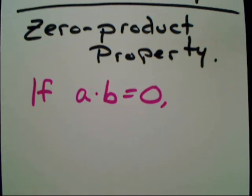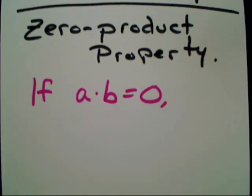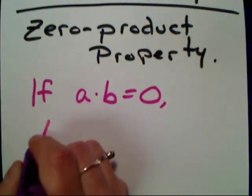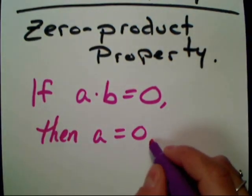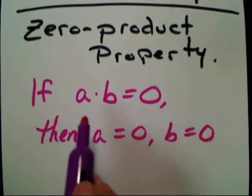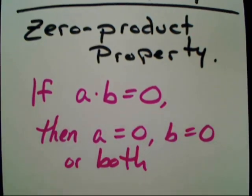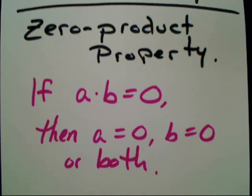Let's think about when we learned our multiplication tables. Any number times zero was always zero, and zero times any number is zero. So if I have two things being multiplied together equal to zero, then I know that either A has to equal zero — because zero times some number is zero — or B has to equal zero — as some number times zero is zero — or they're both equal to zero, as zero times zero is zero. That's simply what the zero product property says: if I have two numbers multiplied together equal to zero, then one of the two factors has to be zero.